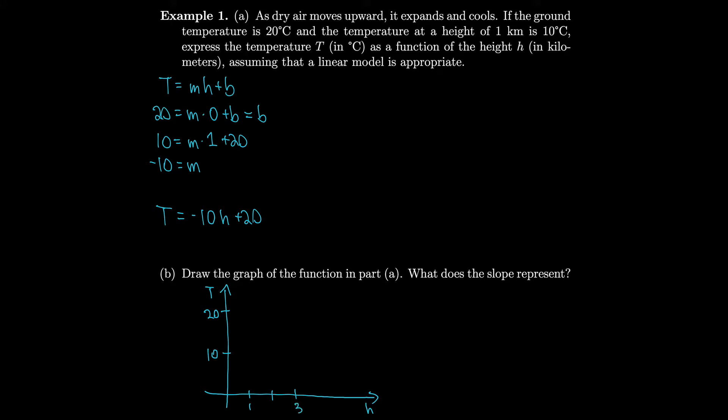So we can draw the line going down 20 over 2, which is the same as going down 10 over 1. That matches up with our slope of negative 10.